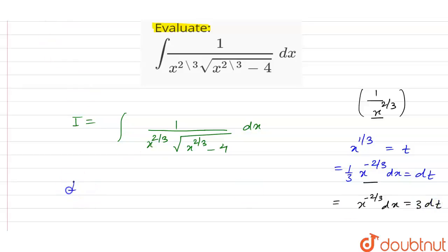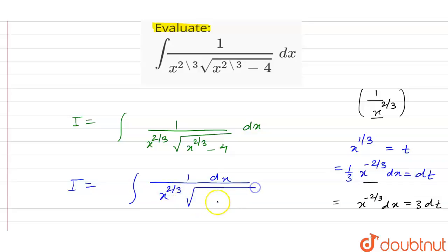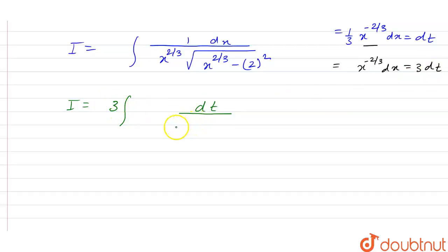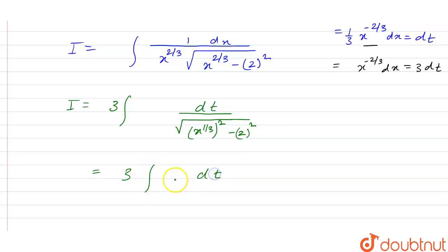Putting x raised to power 1/3 as t, we have in the numerator x raised to power minus 2/3 dx, and in the denominator x raised to power 2/3 under root of x raised to power 2/3 minus 4, which we write as 2 squared since 4 is 2 squared. So I becomes the integral of 3 dt upon under root of t squared minus 2 squared.